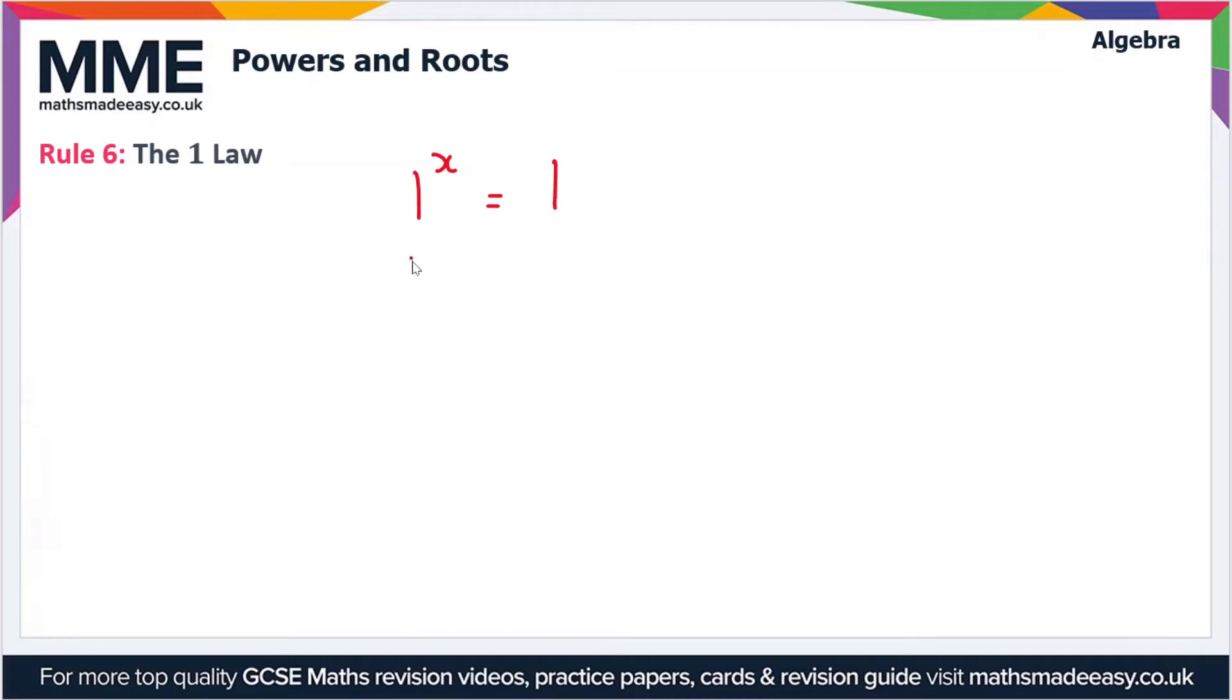It could be one squared, which is equal to one. Could be one cubed, which is equal to one. One to the minus five is equal to one. One to the one million, guess what?